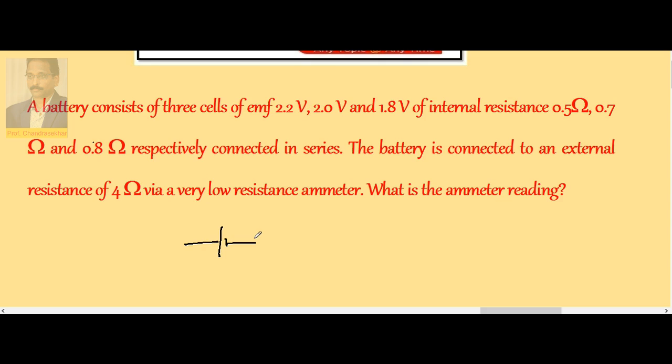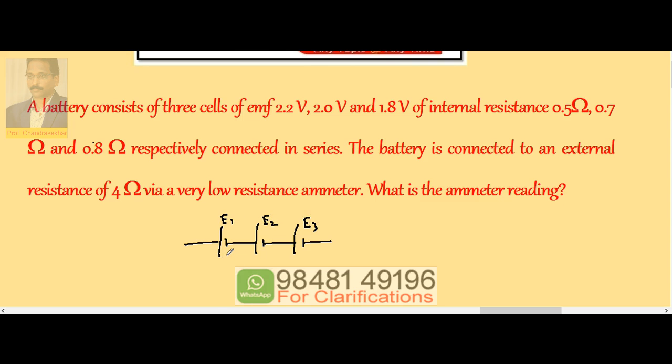So here, battery consists of three cells, so let us consider three cells connected in series. Say E1, E2, E3, because EMFs and internal resistances everything is different: R1, R2, R3 internal resistances.